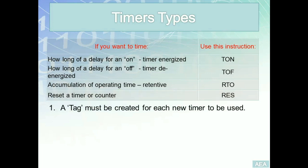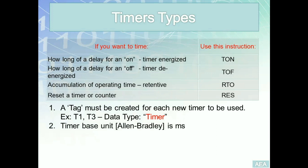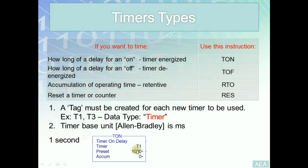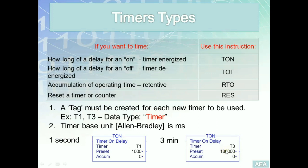Two main factors to remember when creating a timer: first, a tag must be created for each timer used in the program — you can give it any name, but the data type must be timer. Second, the base unit in Allen Bradley is a millisecond, so if you want the timer to run for one second, the preset value must be 1,000. For three minutes, the preset value would be 180,000 milliseconds.